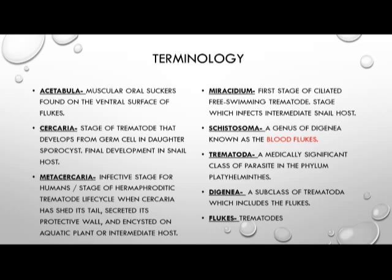Schistosoma is a genus of Digenea known as the blood flukes. Trematoda are a medically significant class of parasites that belong to the phylum Platyhelminthes, the flatworms. Digenea is a subclass of Trematoda which includes the flukes, and flukes are also known as Trematodes — you'll see that word used interchangeably.